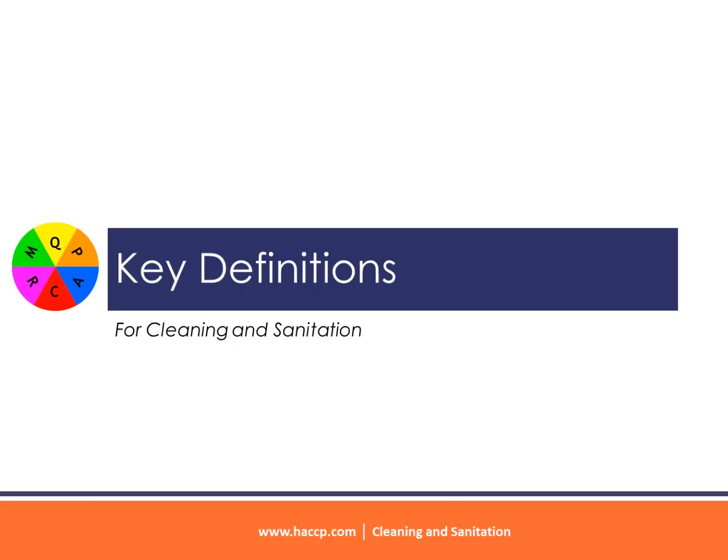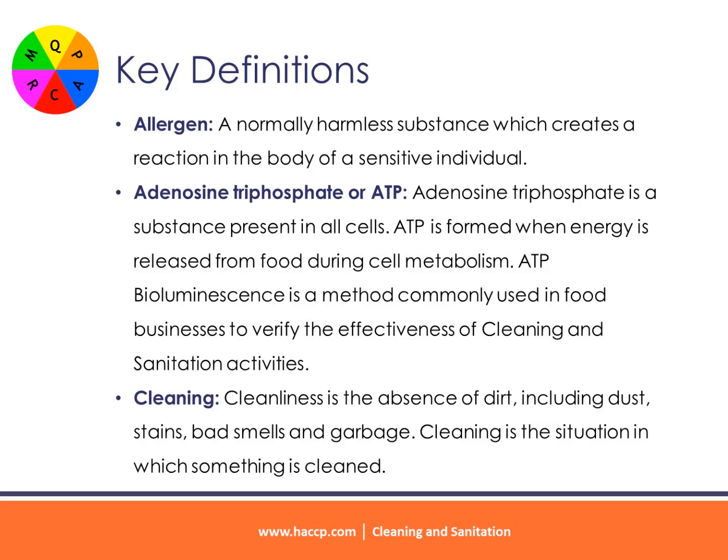Allergen: a normally harmless substance which creates a reaction in the body of a sensitive individual. Adenosine triphosphate, or ATP, is a substance present in all cells. ATP is formed when energy is released from food during cell metabolism. ATP bioluminescence is a method commonly used in food businesses to verify the effectiveness of cleaning and sanitation activities.